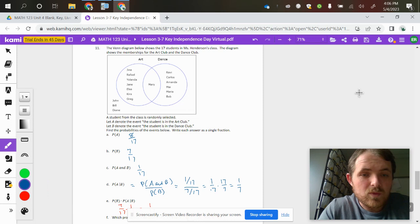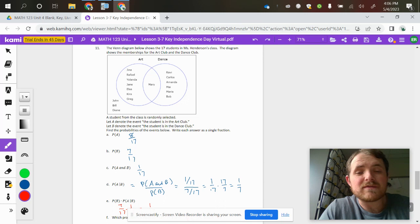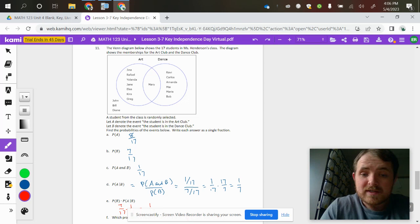So if we look at the probability of A happening, the art club, there are 1, 2, 3, 4, 5, 6, 7 kids that are only in art, but then there's Mary here that's actually in both. So our probability that someone is in art is that there's 8 students out of the 17 in art. We can include Mary even though she's not just in art.